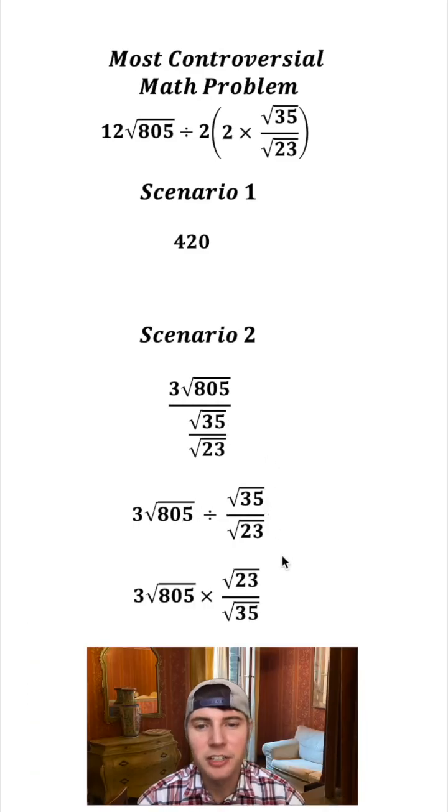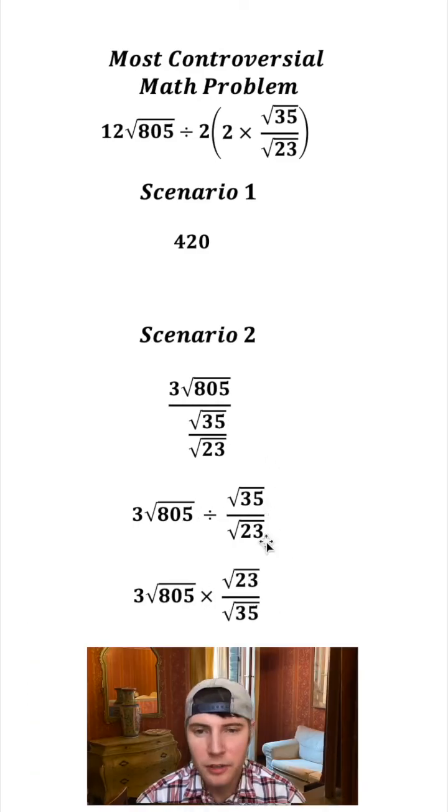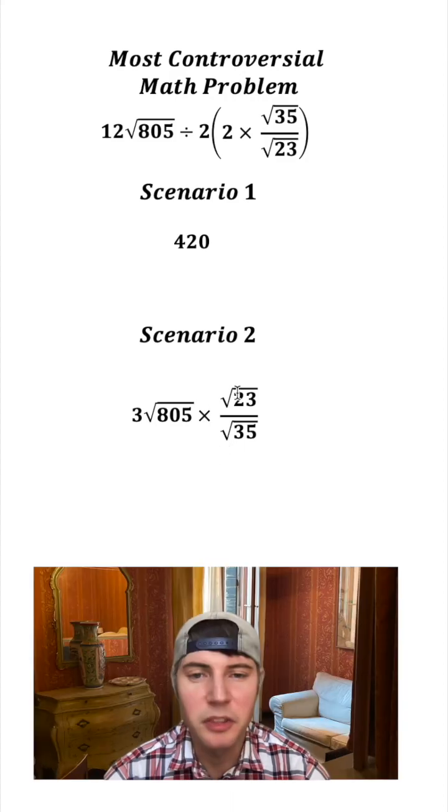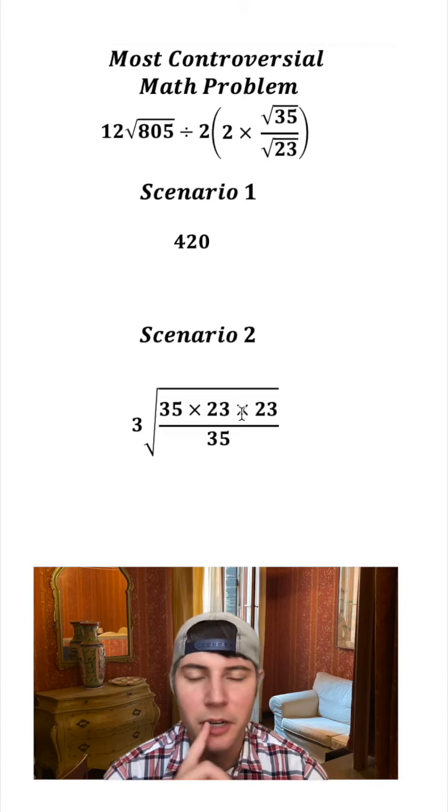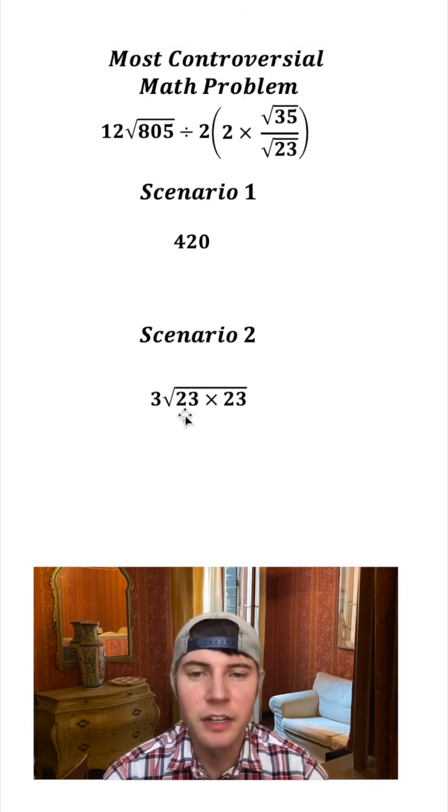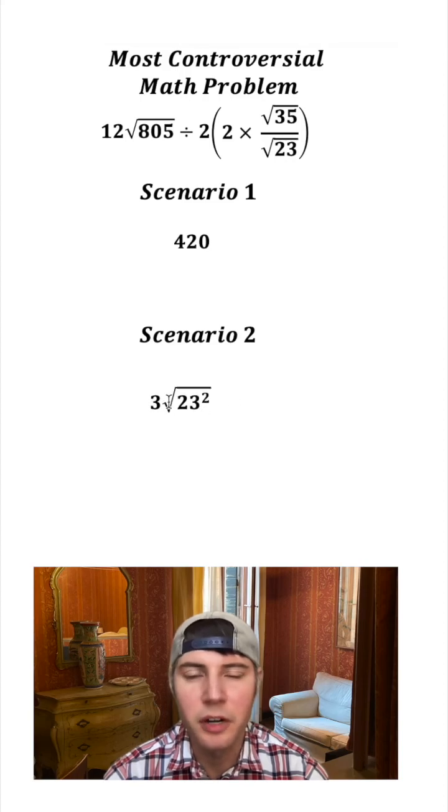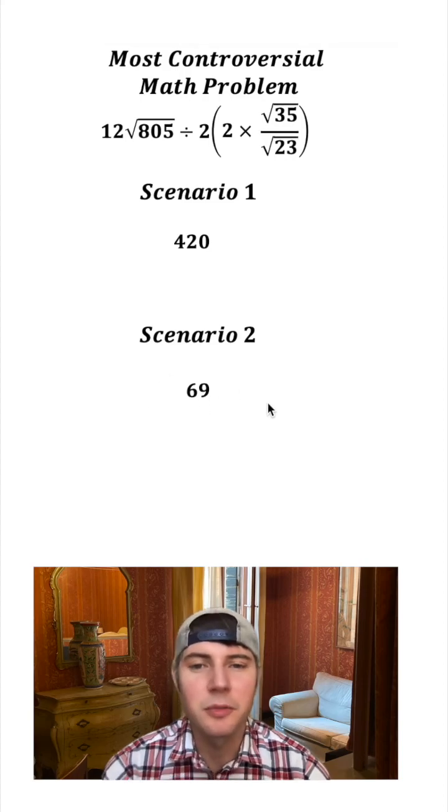This division of a fraction is the same thing as multiplying by its reciprocal. So let's get rid of this stuff and bring this up. Let's put these two roots inside the square root. Let's break this 805 into 35 times 23. These 35s will cancel each other out, giving us just the square root of 23 times 23. 23 times 23 is 23 squared. Square root of 23 squared is 23, and 3 times 23 is 69.